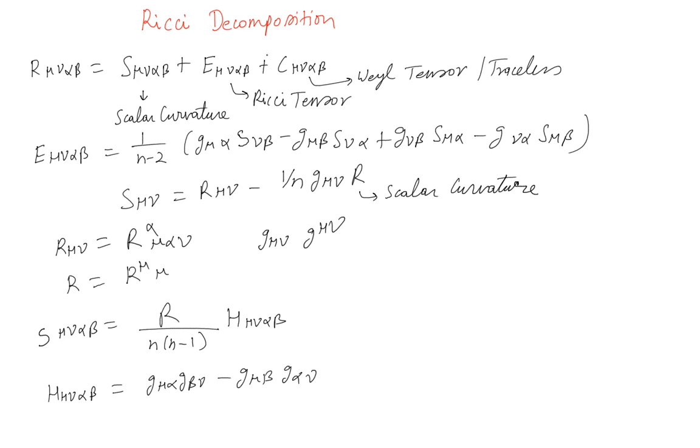So three parts: first one has a contribution from scalar curvature, second one has a contribution from Ricci tensor which is defined here, and the third one is called the Weyl tensor which is traceless.